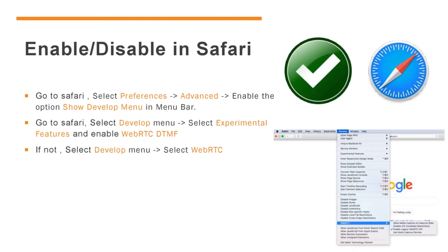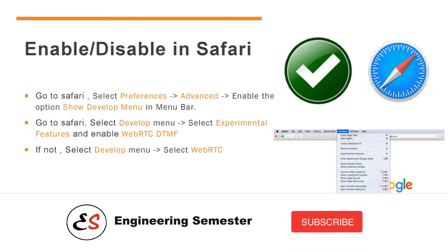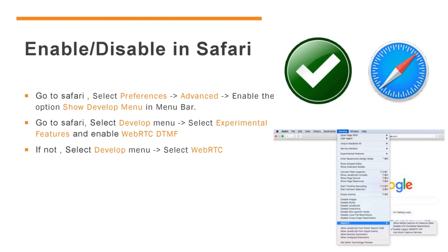Next, coming to Safari browser — here you can also control WebRTC using the browser settings option. Go to Safari and select Preferences. A window will open; select the Advanced tab and enable the option Show Develop Menu in Menu Bar. Now you will see a Develop option in Safari. Go to the Develop tab and select Experimental Features, then enable WebRTC DTMF. If you want to disable WebRTC, you can do so with this method. Note that in some of the latest Safari versions, you can directly get a WebRTC option from the Develop tab. I have attached a reference image for your understanding.